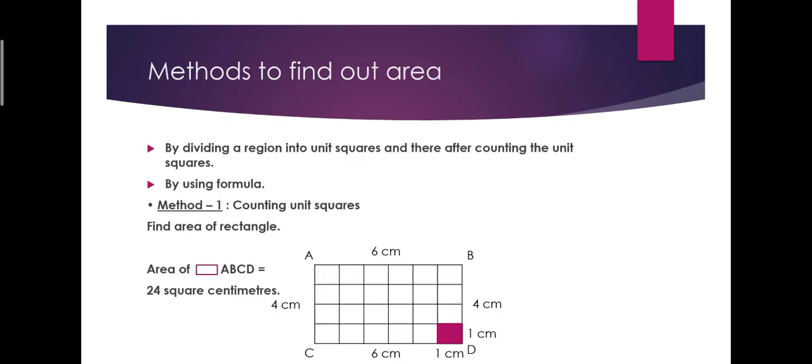Then, methods to find out area. What are the methods? There are two methods. The first one is by dividing a region into unit squares and thereafter counting the unit squares. Second method is by using formula. Then let's see method one: counting unit squares, finding area of rectangle.